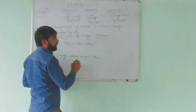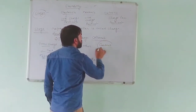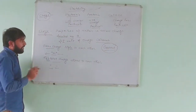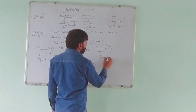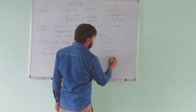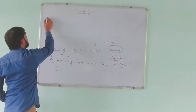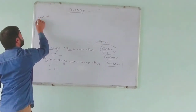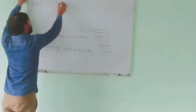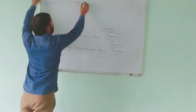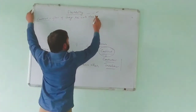Now, current. Current flows through conductors, not insulators. The flow of charge per unit time is called current.